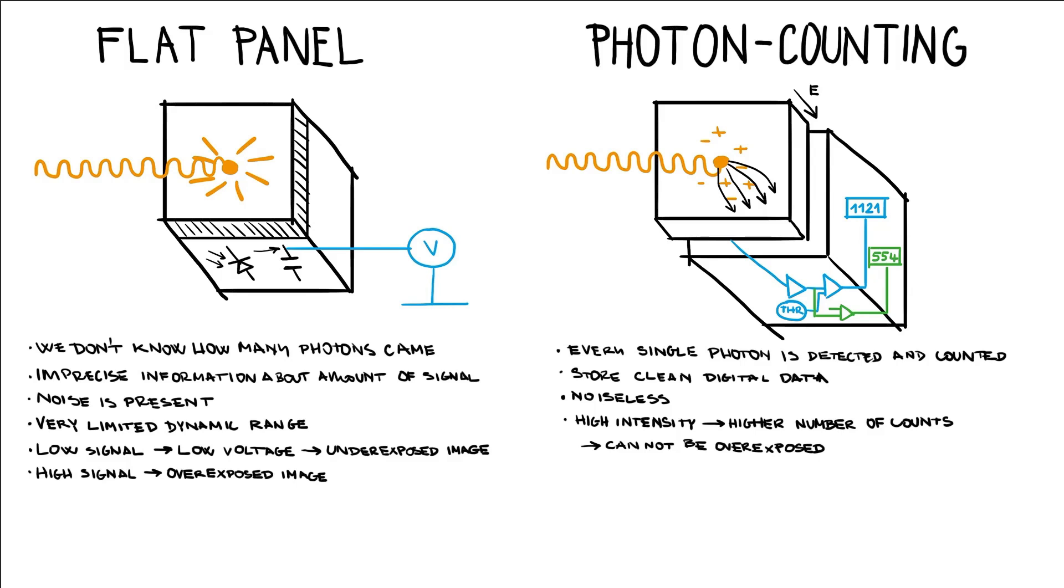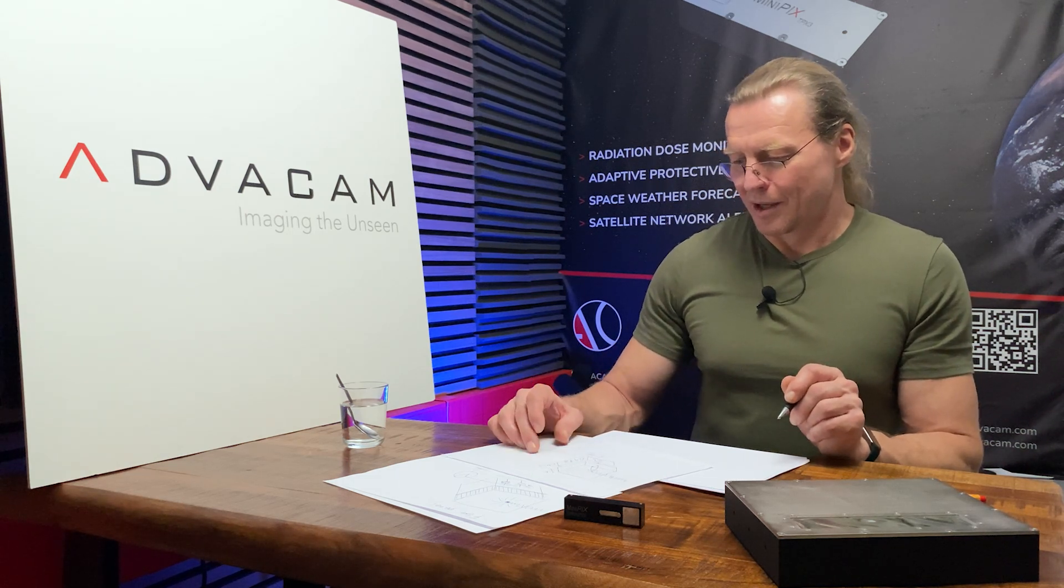And then in case of very high intensity, again, we can count forever. It doesn't matter how many counts we have here, we can have 1 million, we can have 10 million counts. So it doesn't matter. It would always remember clean digital number without any added noise. So these are the main differences between these two types of technology.